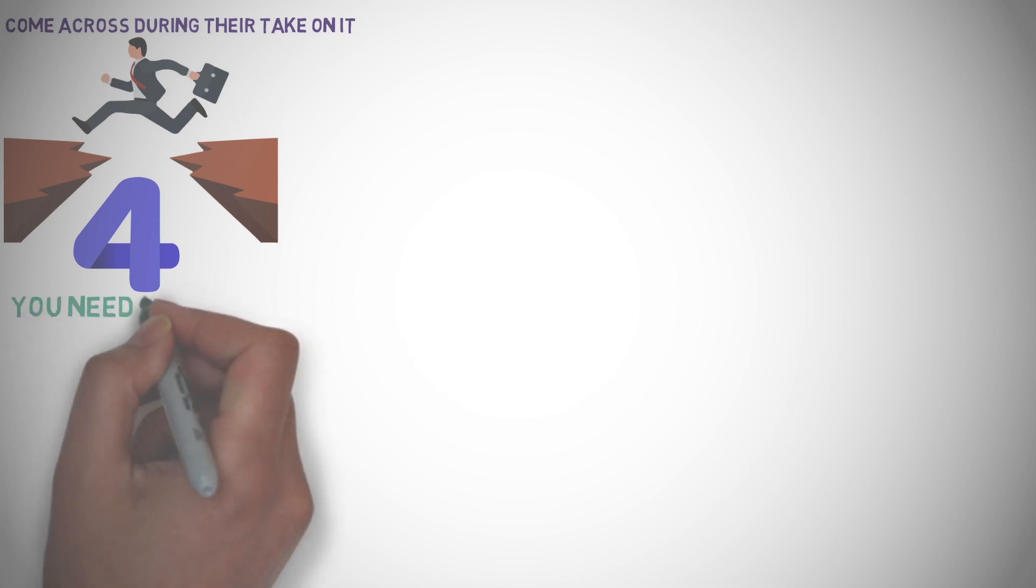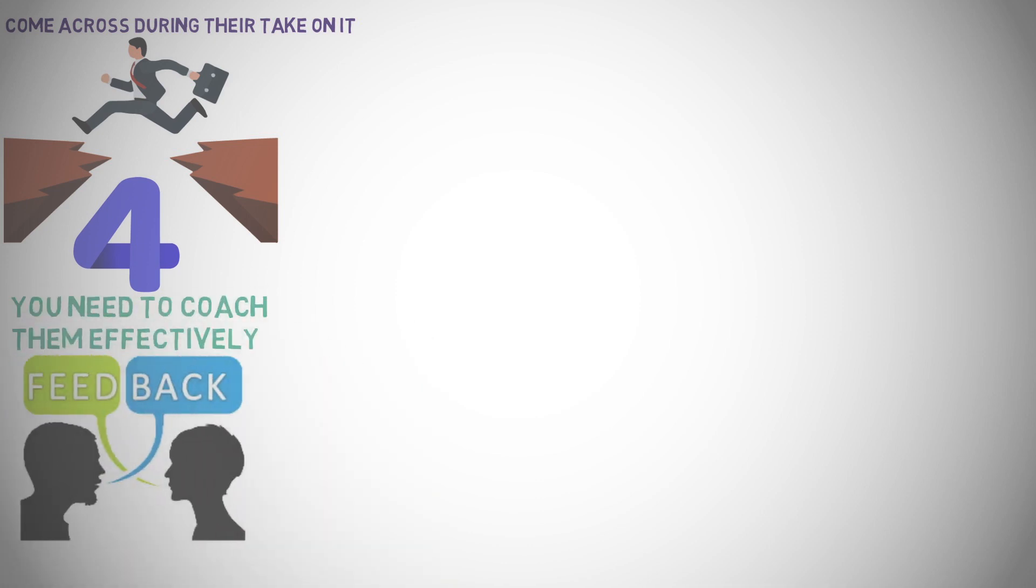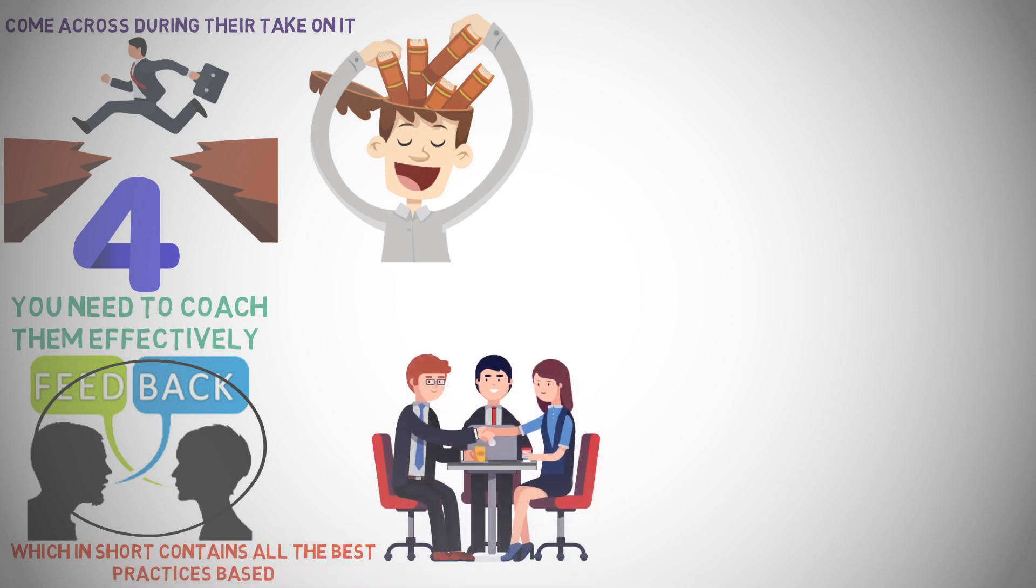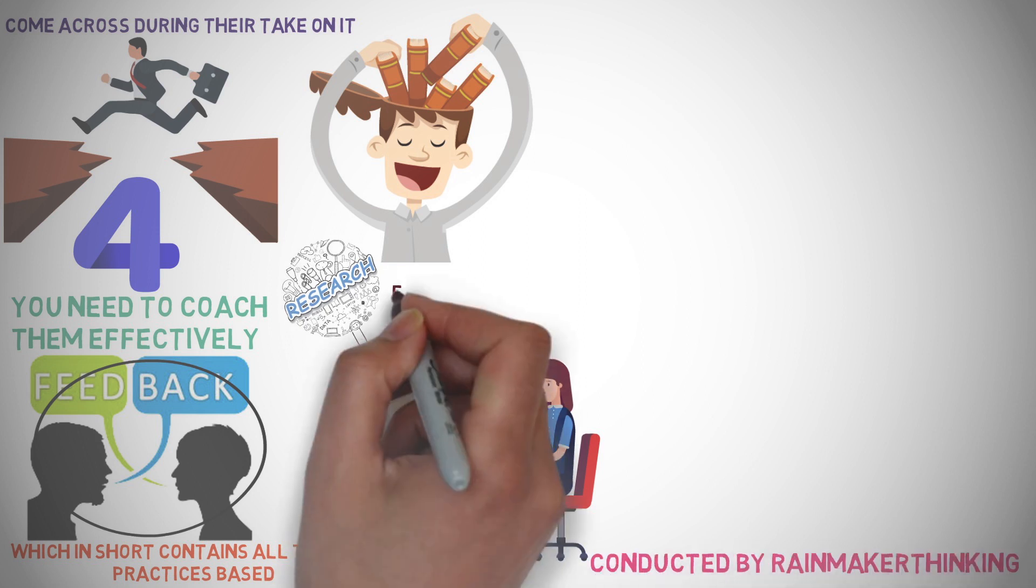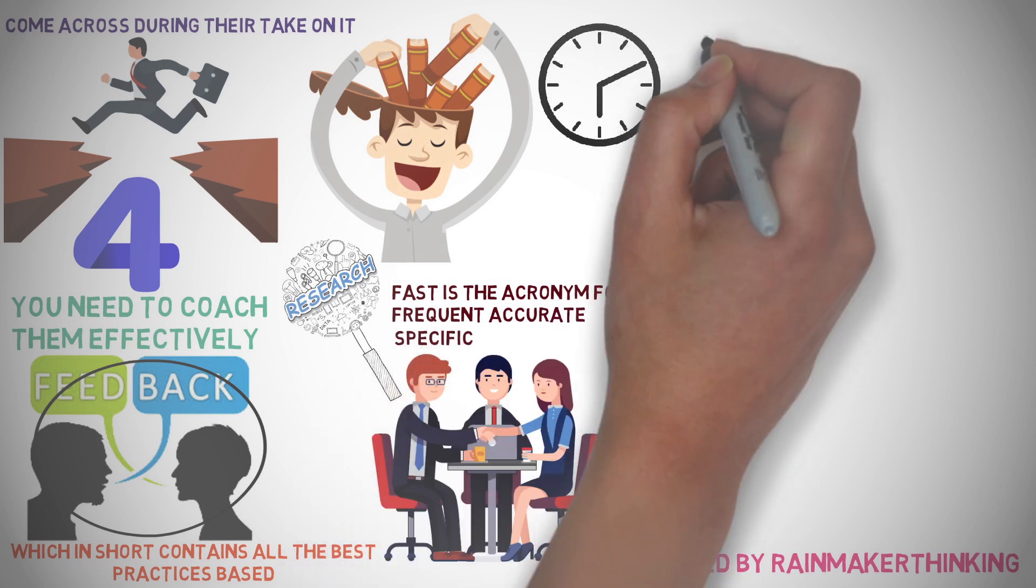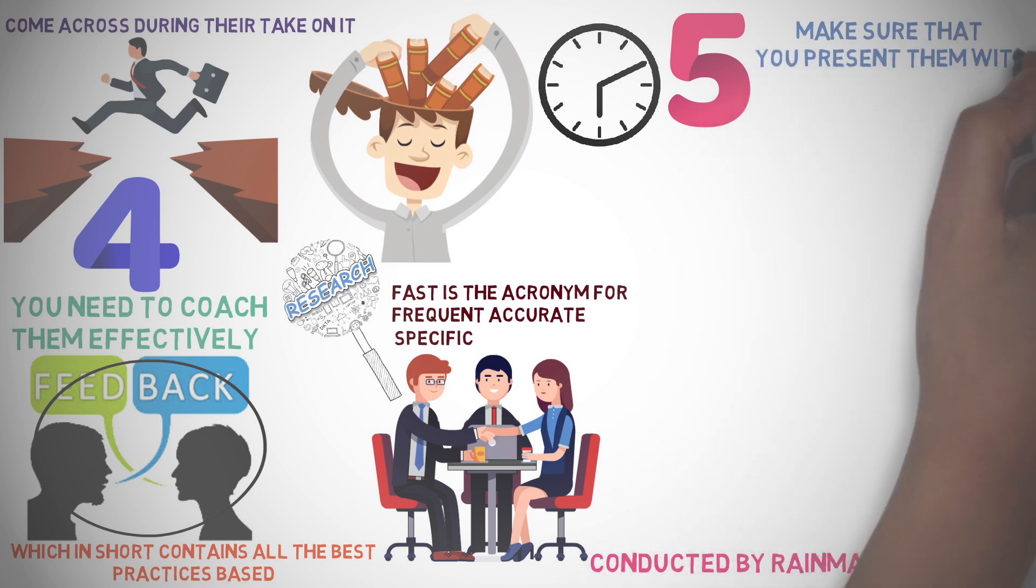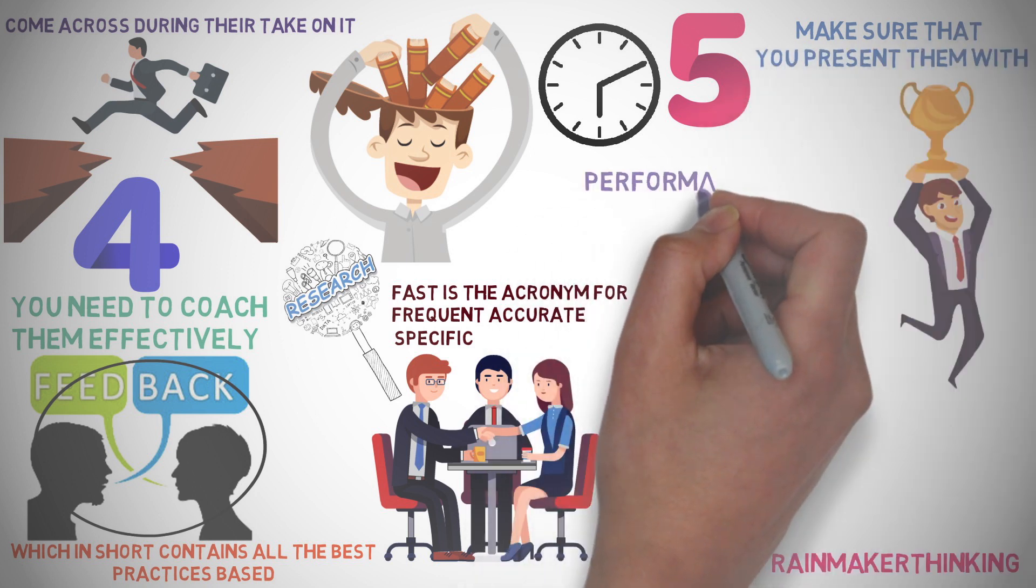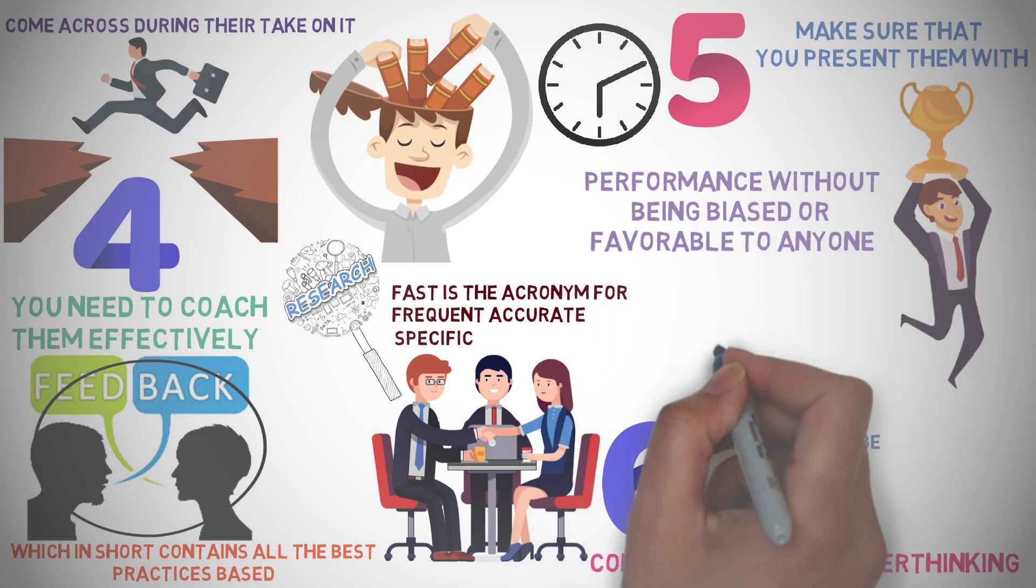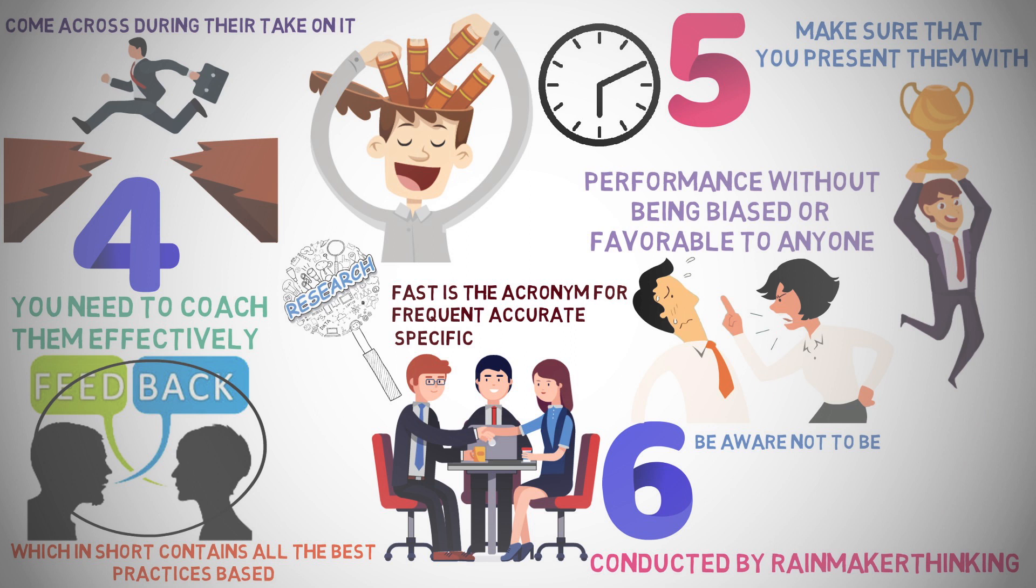Number 4. You need to coach them effectively by using the fast feedback approach to ensure their learning and growth. Fast feedback refers to a system which contains all the best practices based on continued workplace interview research conducted by Rainmaker thinking where fast is the acronym for frequent, accurate, specific, timely. Number 5. Make sure that you present them with rewards on the basis of their performance without being biased or favorable to anyone. Number 6. Be aware not to be abusive in approach while dealing with people regardless of how harsh and chaotic the situation gets.